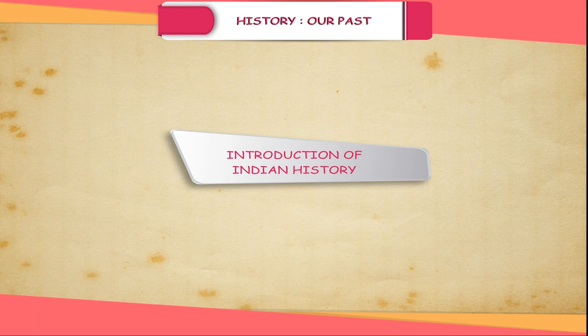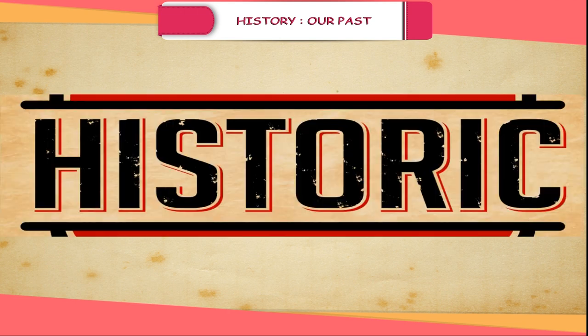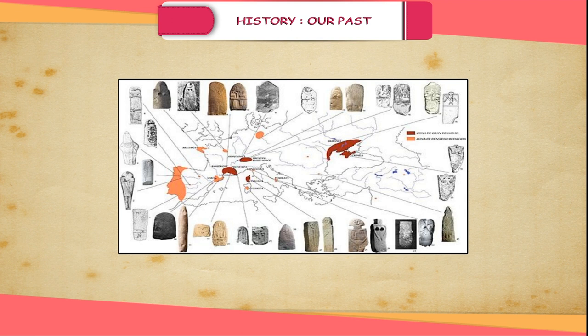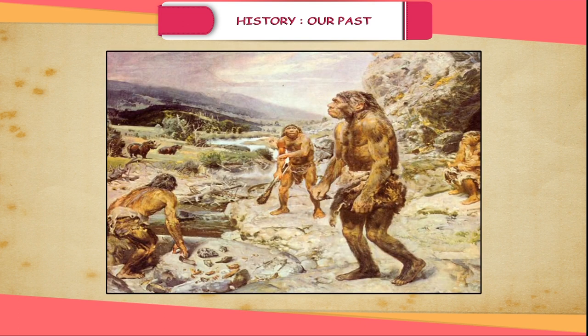Indian history is divided into two phases: prehistoric and historic. The prehistoric man left no written records, but they have left their remains. The archaeologists have unearthed many sites in India of the Stone Age, which have been divided into three periods: Palaeolithic, Mesolithic, and Neolithic.